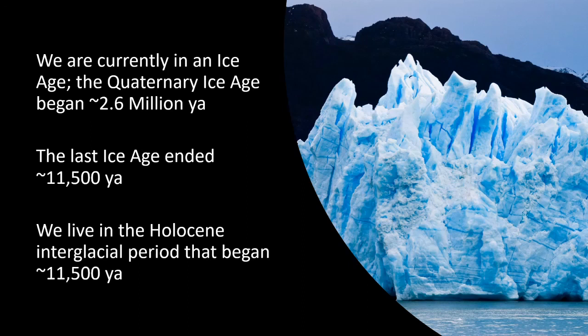There is a confusion that needs to be addressed. It is encapsulated by these three statements. The first statement says that we are currently in an Ice Age — the Quaternary Ice Age — which began approximately 2.6 million years ago. The second statement asserts that the last Ice Age ended approximately 11,500 years ago, while the third statement has it that we live in the Holocene interglacial period that began approximately 11,500 years ago.